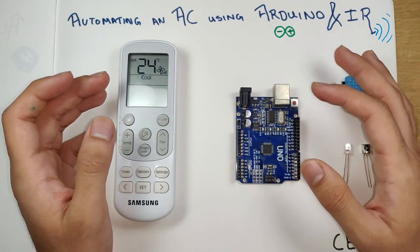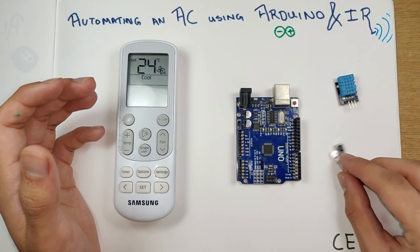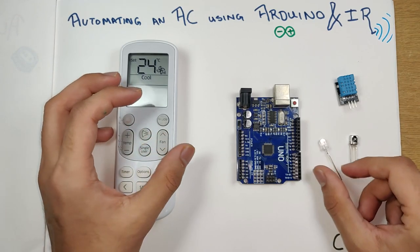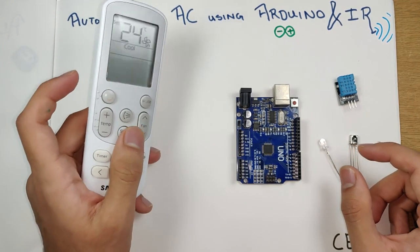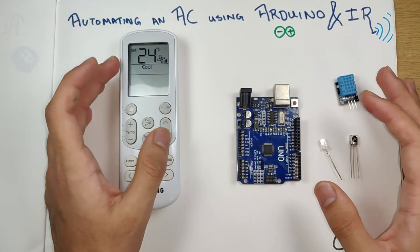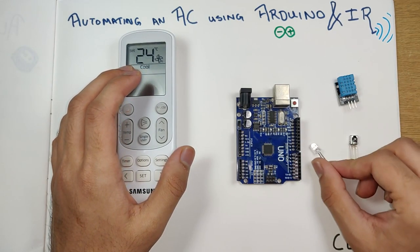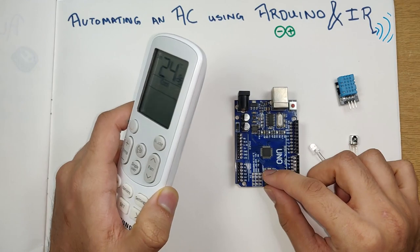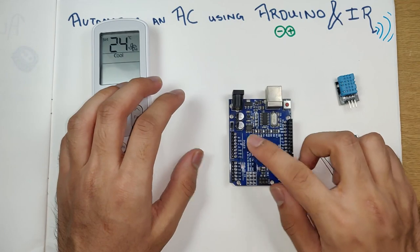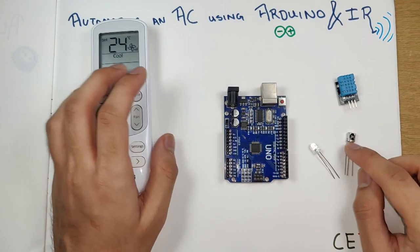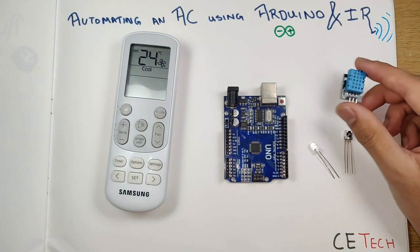What we'll be doing today is controlling an air conditioner using an Arduino and infrared technology, basically mimicking the function of an infrared remote control. This is not a project-specific video — we'll learn how to transmit infrared signals and imitate infrared remote controls, and also how to read infrared signals on the Arduino using an IR sensor.